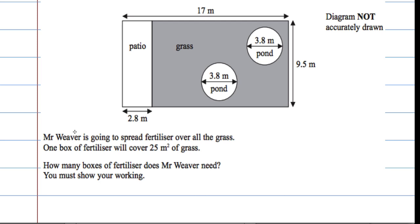Mr Weaver is going to spread fertiliser all over the grass and one box of fertiliser will cover 25 metres squared of grass. How many boxes of fertiliser does Mr Weaver need? We must show our working.